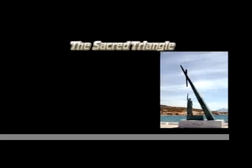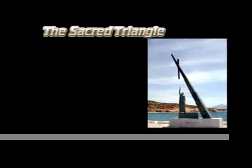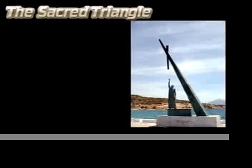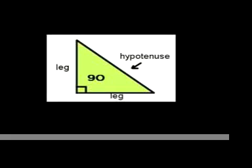The triangle is a three-sided polygon. The most famous triangle is the right triangle, often called the sacred triangle. The right triangle is composed of two perpendicular sides, called legs, and a connecting side, called the hypotenuse.